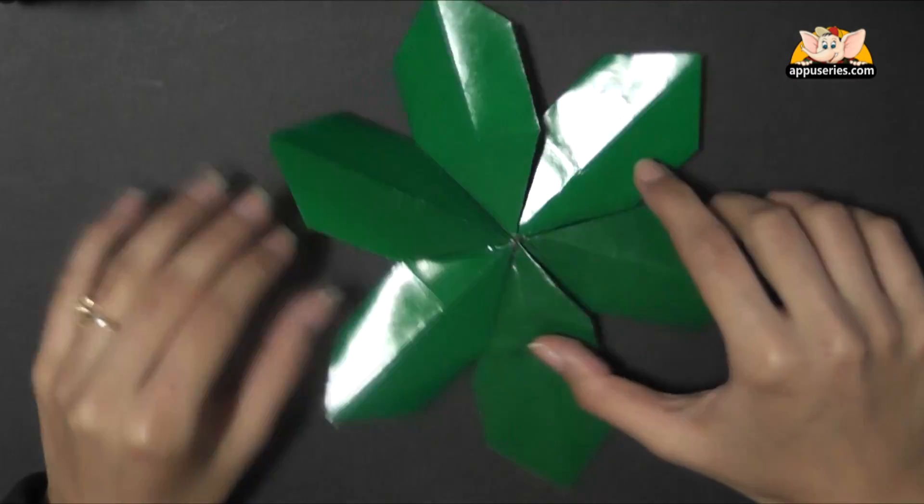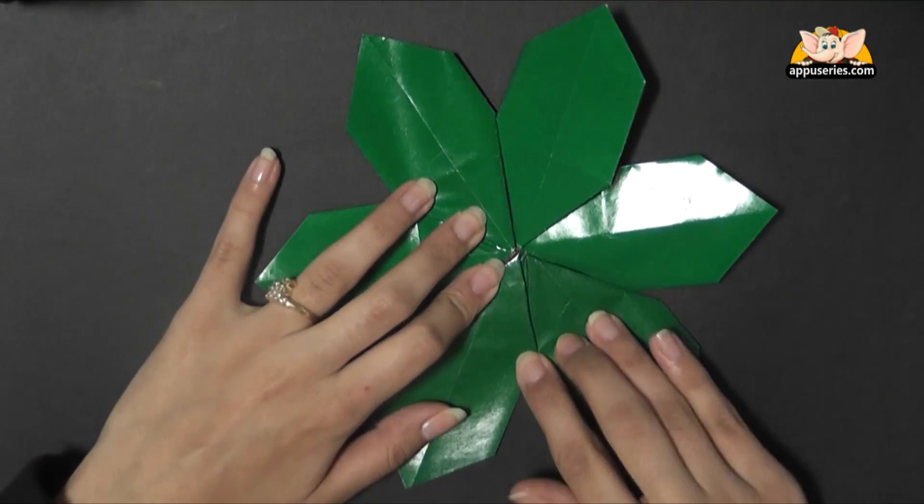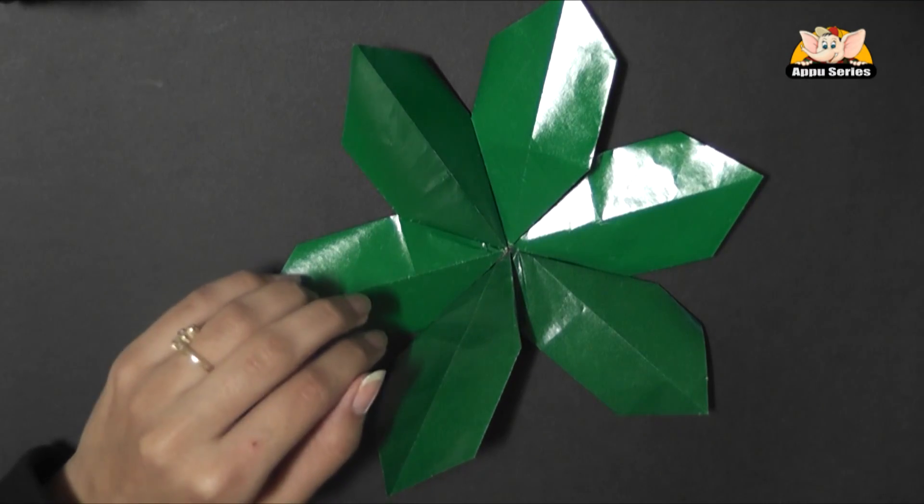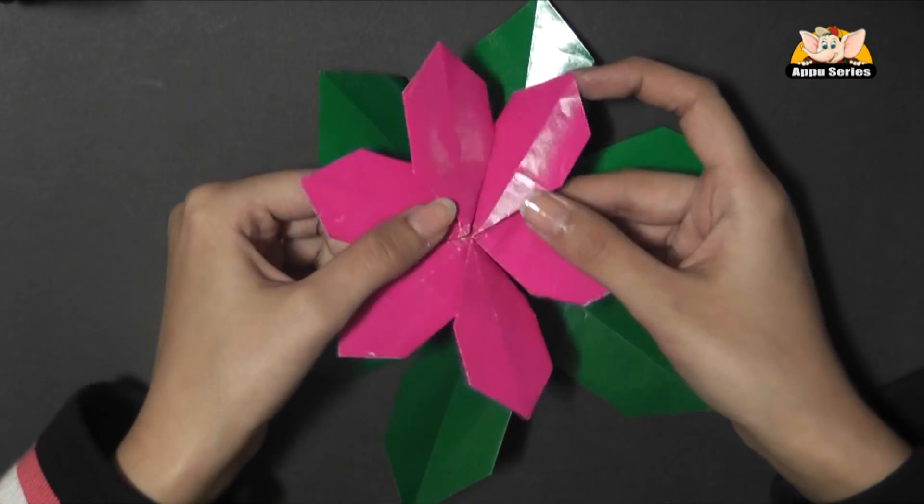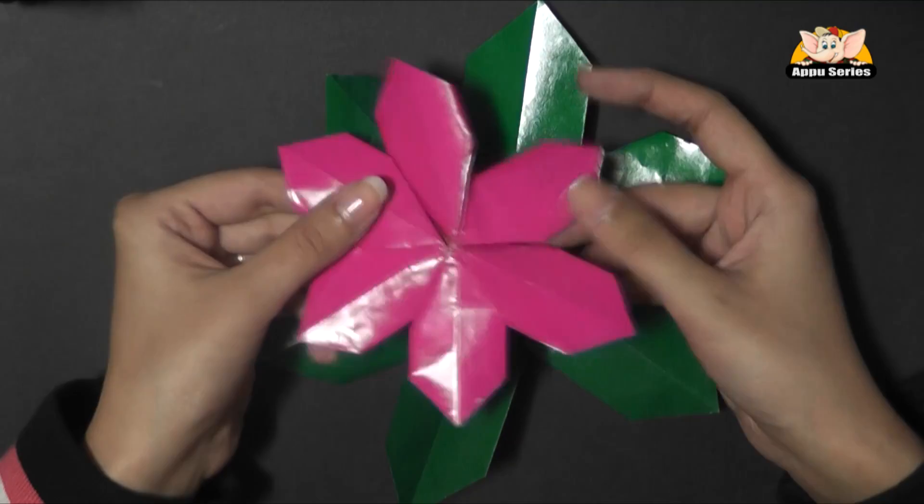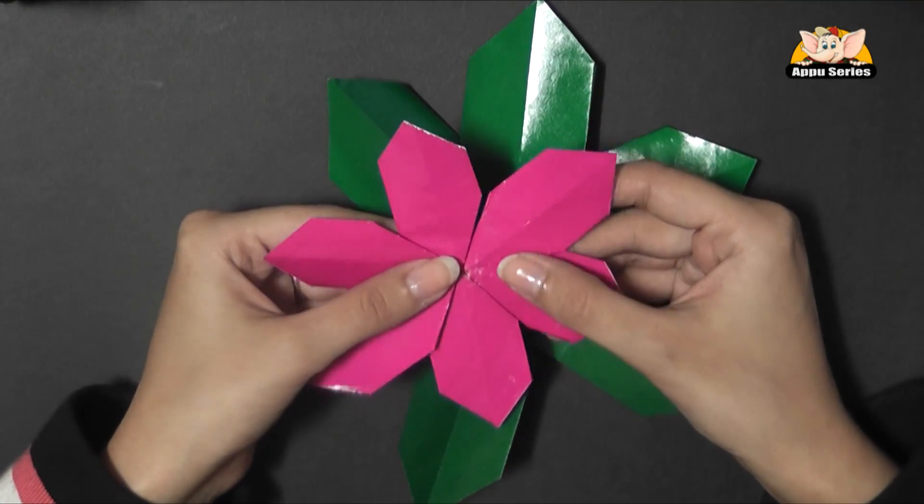This is going to be our base of leaves for the flower. Now for the flower we will follow the same steps but choosing a different color and make three units.